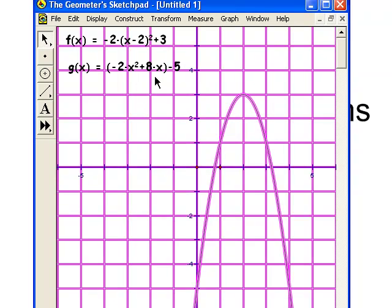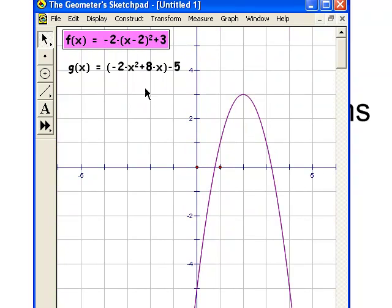So for example, we're going to be taking an equation like this: f(x) equals negative 2 times (x minus 2) squared plus 3.